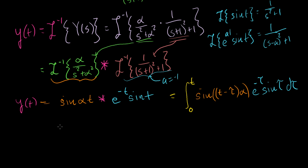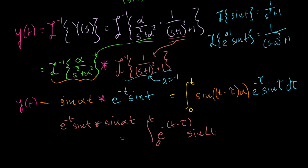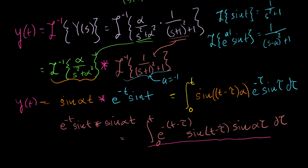We could also write it the other way: integral from 0 to t of e^(−(t−tau))·sin(t−tau) times sin(alpha·tau) d tau. These are equivalent — the order doesn't matter for a product of Laplace transforms. On a test, you'd normally just be expected to get the solution into this convolution integral form.